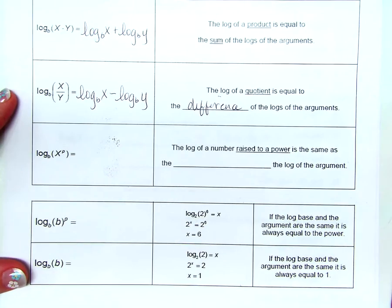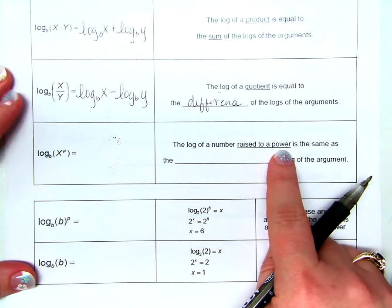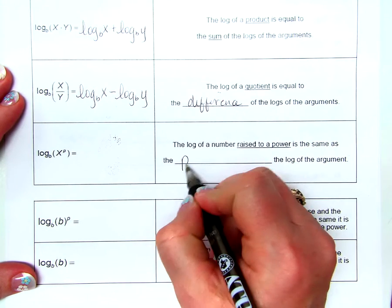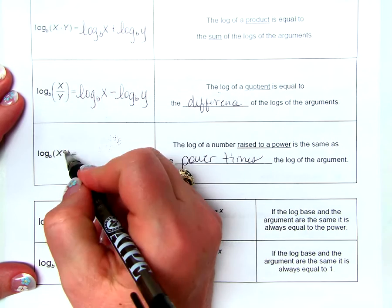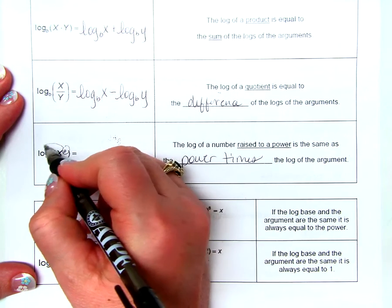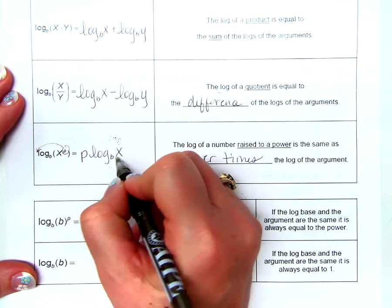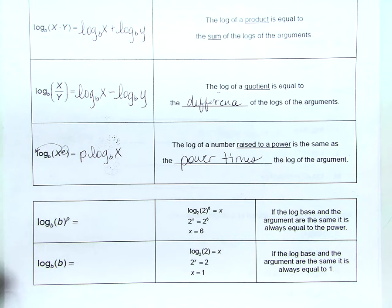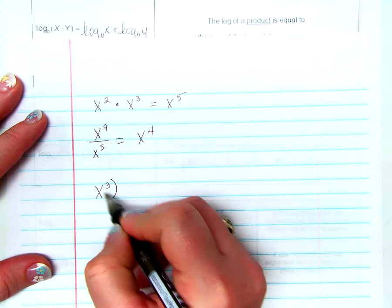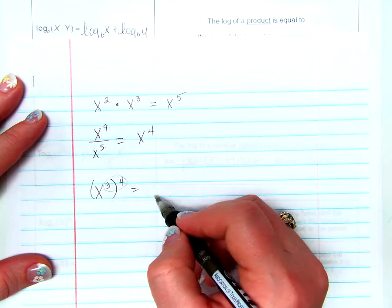Another property of logarithms: log base B of x to the p power. The log of a number raised to a power is the same as the power times the log of the argument. This power becomes a multiplier in front of the logarithm: p log base B of x. These three properties are actually similar to exponent rules — just like raising a power to a power meant multiplying those two numbers.